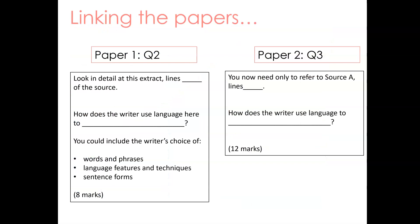So what links are there between the papers? I've chosen these two because there are strong similarities in the type of question and in the style of your answer. For Paper 1 Question 2, you'll be guided to look at a particular area of the extract — specific lines of the source — and then to say how the writer uses language here to a specific focus. For example: how does the writer use language here to describe the weather? They give you some guidance on what you could focus on: the writer's choice of words and phrases, language features and techniques, or even sentence forms.